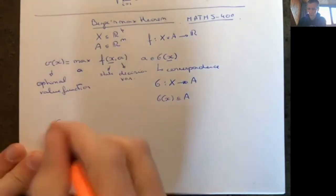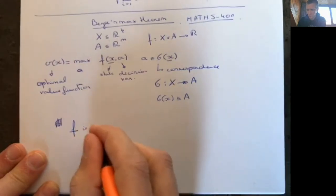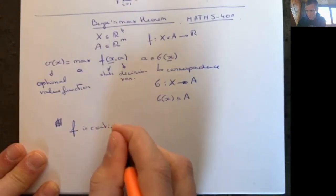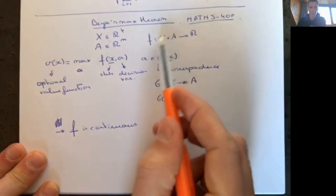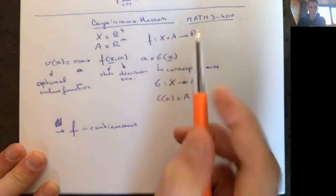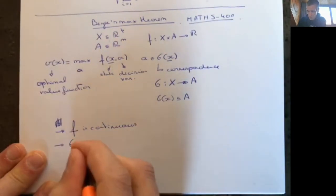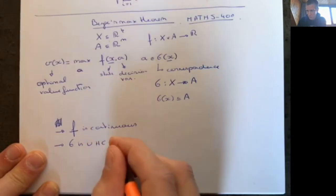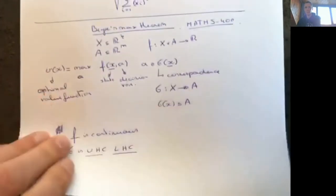This problem is not always well defined. There are some conditions imposed by Berge's Maximization theorem such that it is well defined. The first condition is that f is continuous — it's a continuous function from X times A to R. The second condition is that g is continuous in the sense that it's upper hemicontinuous and lower hemicontinuous.